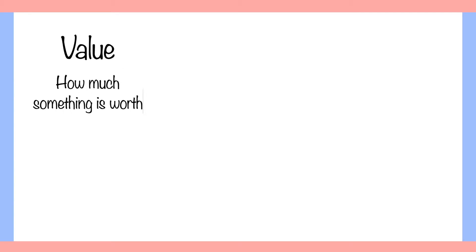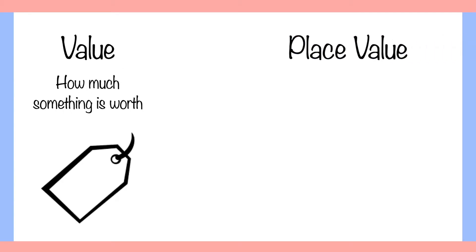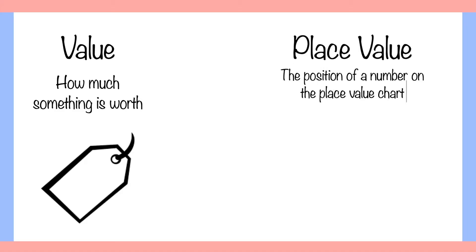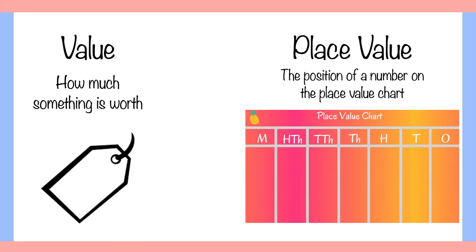Value means how much something is worth. We can usually tell the value of something by its price tag. Place value refers to the position that number is in on the place value chart.